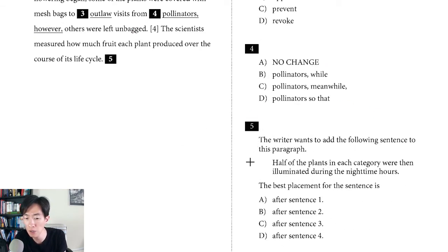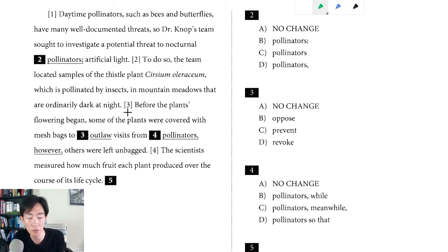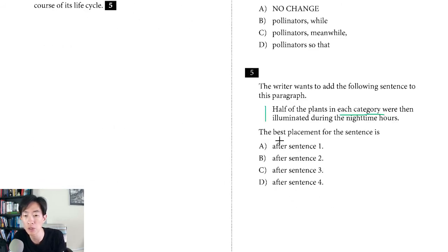Question five says the writer wants to add: 'Half the plants in each category were illuminated during the nighttime hours.' Notice what they're talking about — they're making a subdivision, saying half the plants in each category were illuminated. The best place for this is right after you talk about the two categories. Quickly scanning the paragraph, the two categories are introduced in sentence three: 'Some of the plants were covered with mesh bags' — that's one category — 'while others were left unbagged.' Right after introducing bagged versus unbagged, it's appropriate to mention what you're doing in each category. The best answer is C.